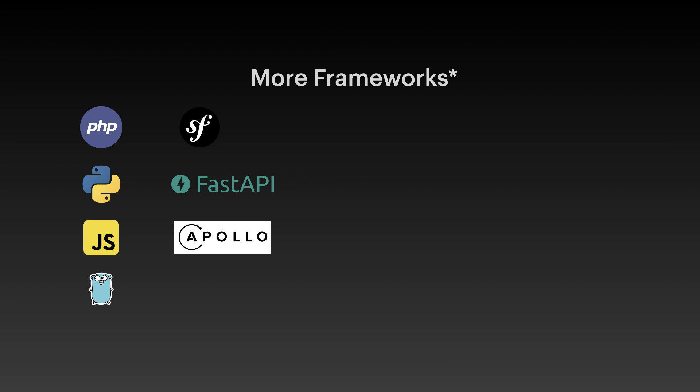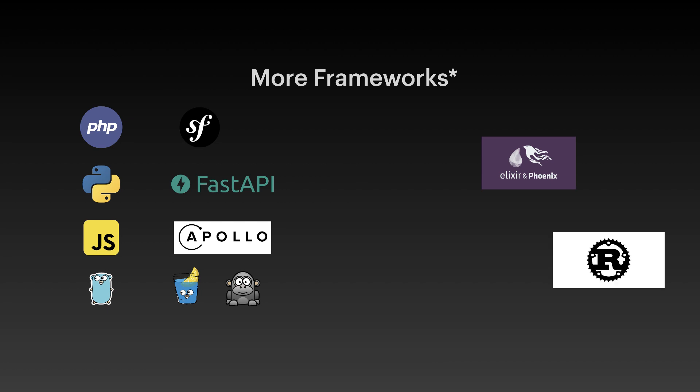So this year I'm planning to use Gin and Gorilla, or other frameworks — you may write a comment in the description. I will also try to introduce new programming languages such as Elixir and Phoenix, Rust, and Scala. All of these are planned, but I'm not sure if I will introduce all of them, or I may introduce other frameworks. That's why I put an asterisk in this section.